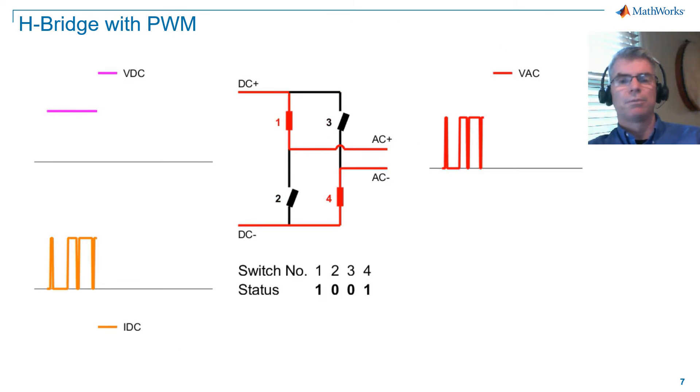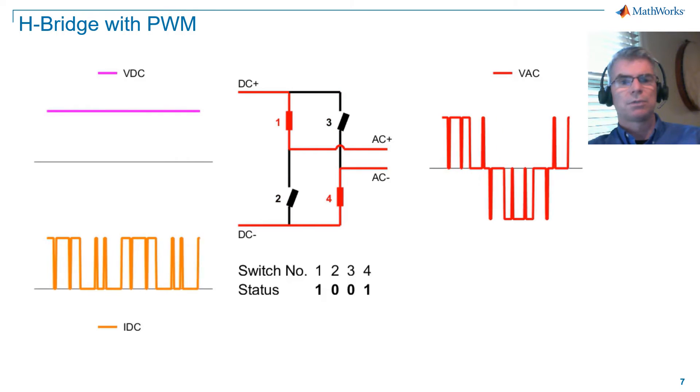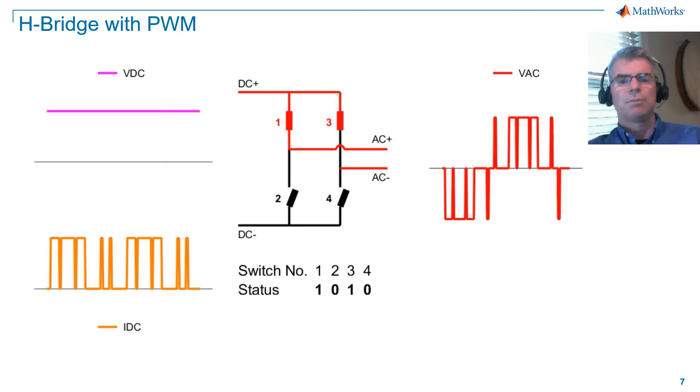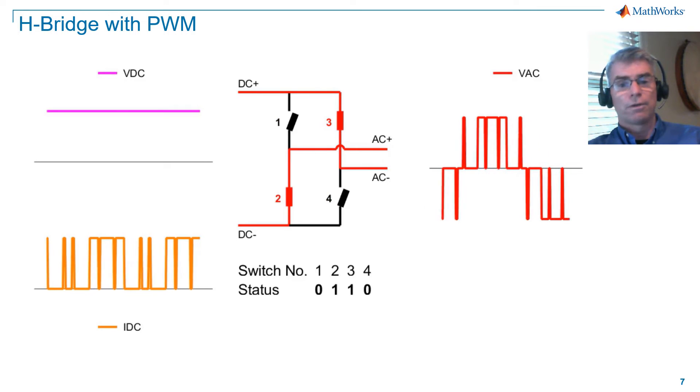Let's take a look at pulse width modulation in action on our H-bridge. Note that the null vectors are used regularly in a PWM switching strategy. You may be wondering how each PWM signal is generated for the four devices. Let's revisit the PWM signal to clarify this.